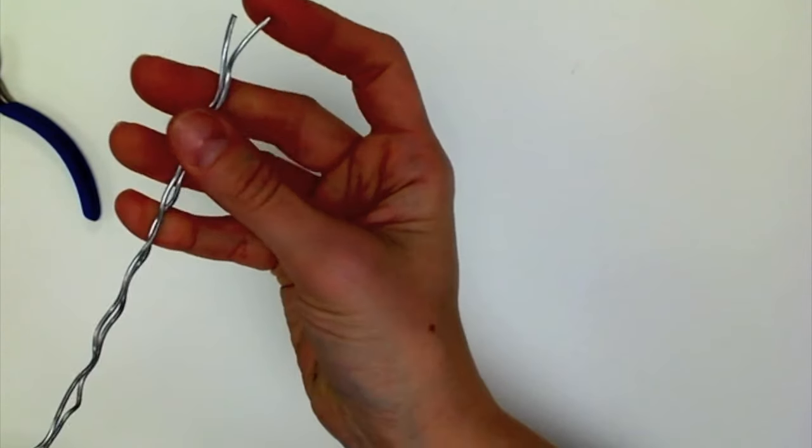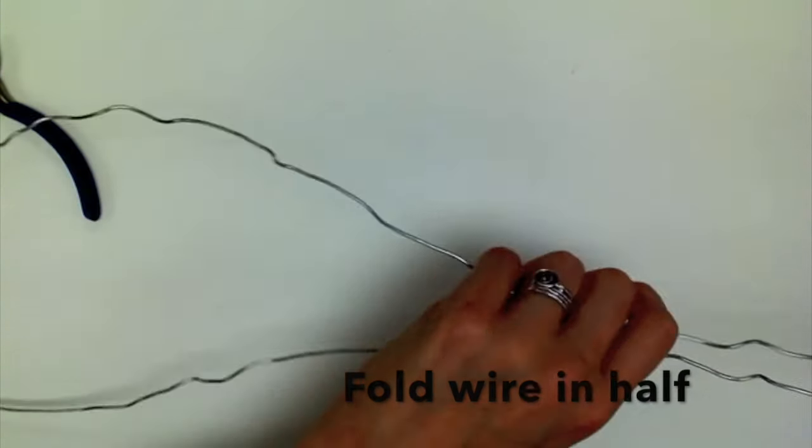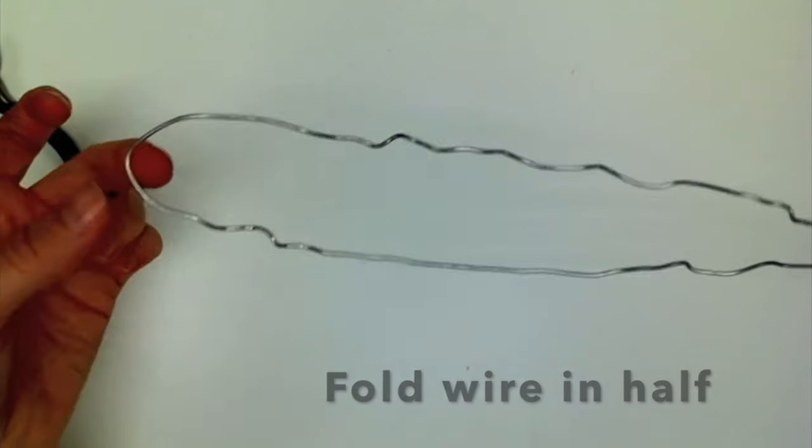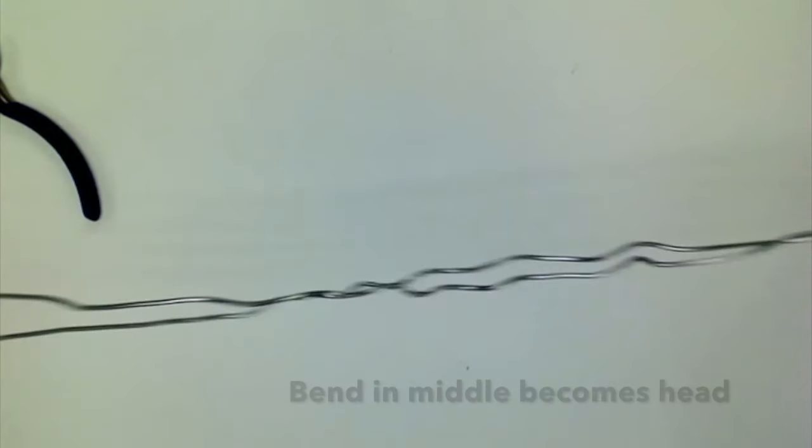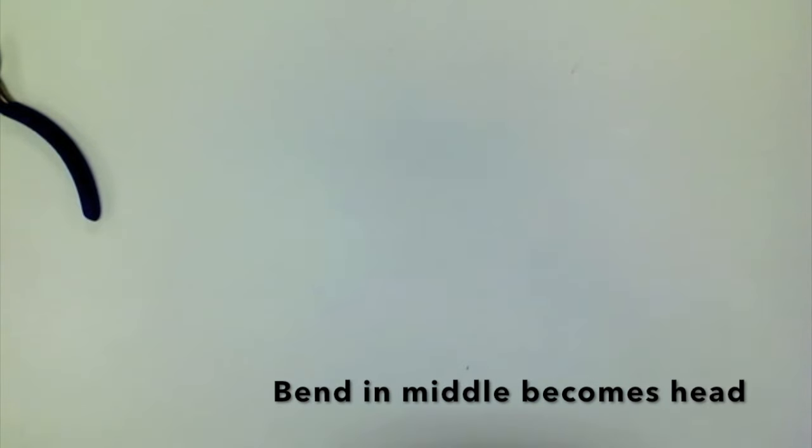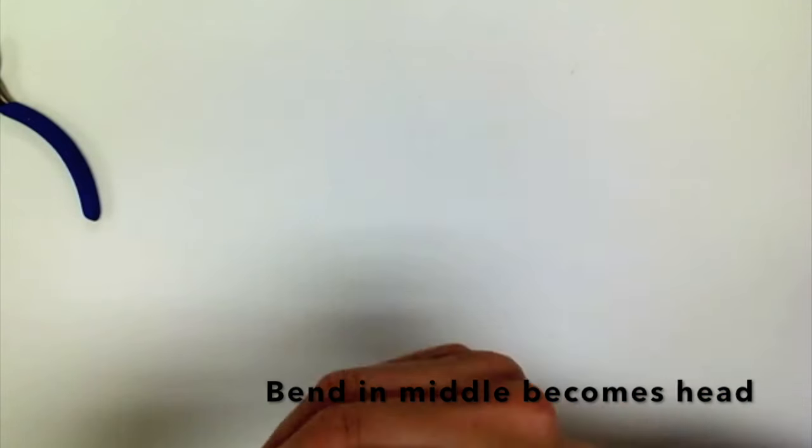Step 1: Fold the wire in half. Line up the two cut ends and give it a tug to find the middle. Step 2: Twist near the bend in the middle so it becomes the head of your armature.